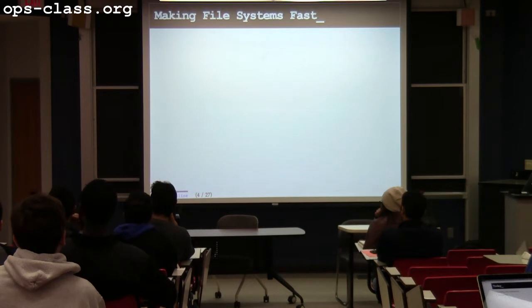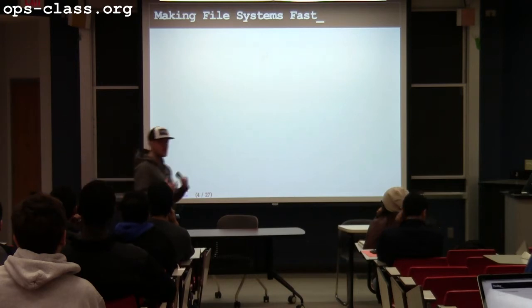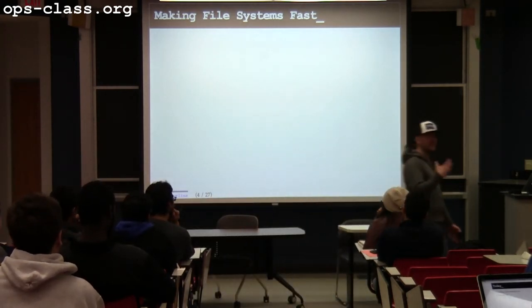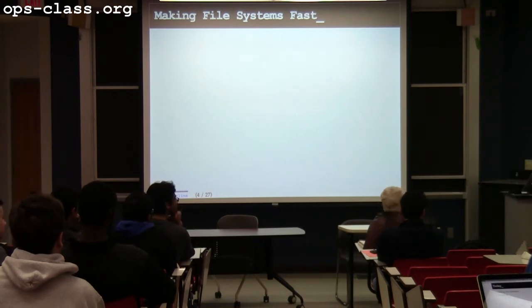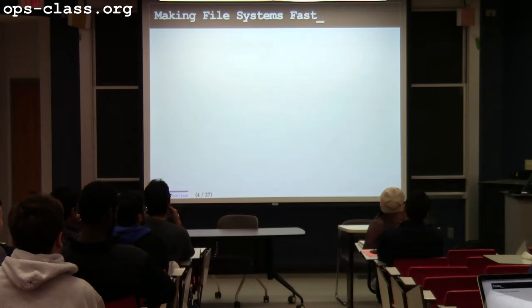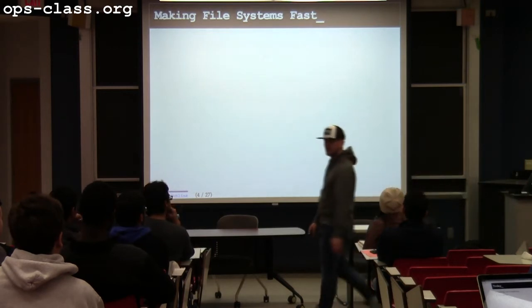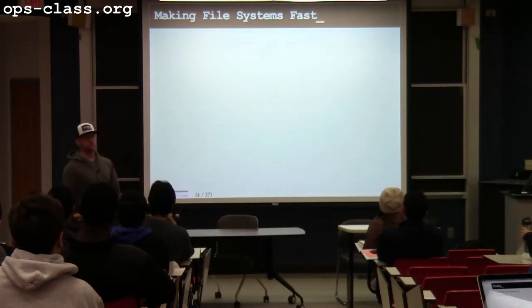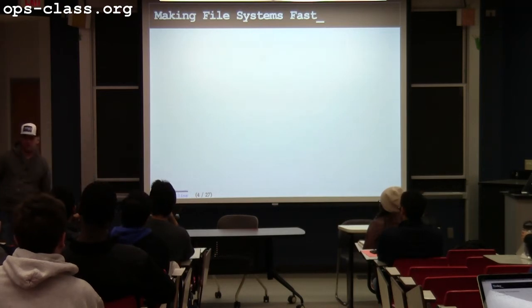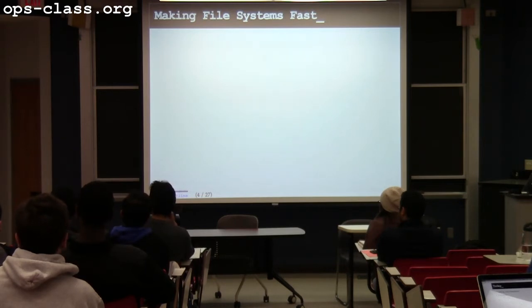When we did this for memory translation, what was the small fast thing we used? The TLB. The TLB acts as a cache of recently used address translations, so I don't have to ask the kernel every time I need to translate a virtual address to a physical address. In this case, the slow thing is the disk — so what's the cache? Memory. Memory of various kinds. Also, to make sure you understand how complicated this actually is: disks themselves have their own internal caches.